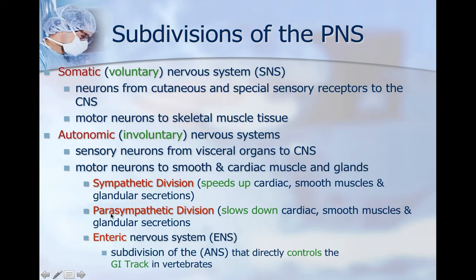Your parasympathetic division slows down cardiac smooth muscle and glandular secretions. The enteric nervous system, the ENS, is the subdivision of the autonomic nervous system that controls your gastrointestinal tract in vertebrates — and you are human, so you are a vertebrate.